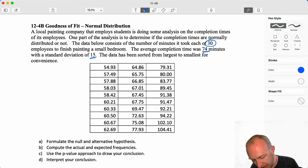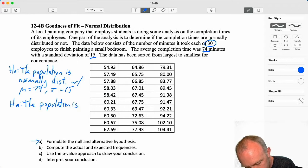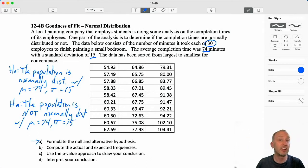So first step, as always, we formulate our test. So our null hypothesis: the population is normally distributed with a mean of 74 and a standard deviation of 15. The alternative hypothesis, as you might expect: the population is not normally distributed with mean 74 and standard deviation of 15. So there's our null and alternative hypotheses.